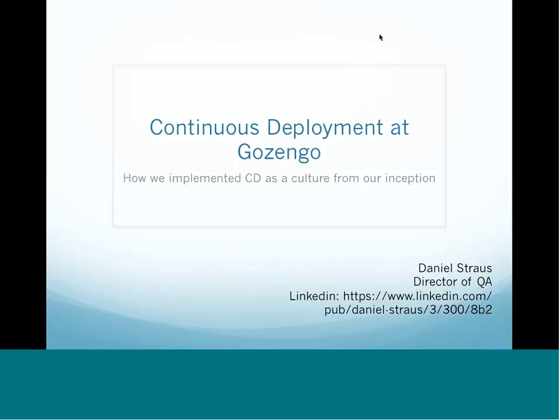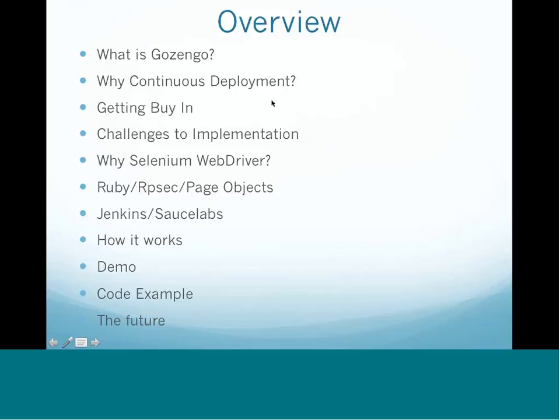Let me get started by giving you an overview of what I'm going to talk about. I'll cover what Gozengo is and what we do, why we decided to do continuous deployment, things like how we were able to get buy-in, the challenges to implementation, why we used Selenium and WebDriver, the tools we chose to build our testing harnesses, how we do our CI and CD with Jenkins and SauceLabs, a code example of how it all works, and things we plan to improve in the future.